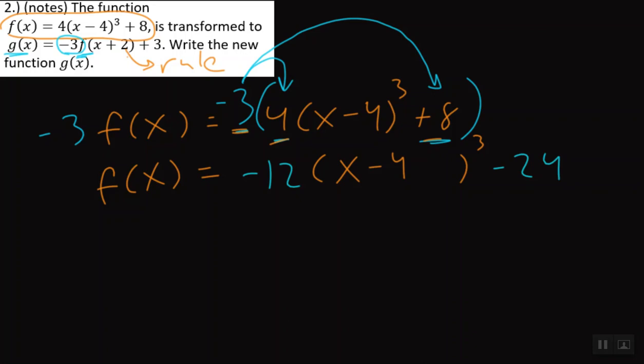Now from here, let me even switch colors again because you have to see this. Now inside the function we have this plus 2, so I can now add it to the inside of the function. And on the outside, as soon as we do our multiplication, we'll add this plus 3. At this point, now I can go ahead and write my final function g(x).